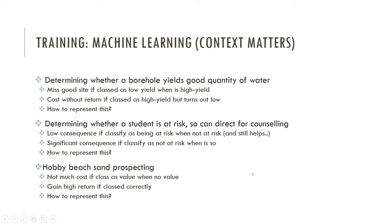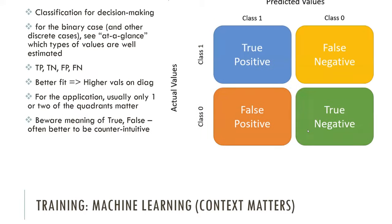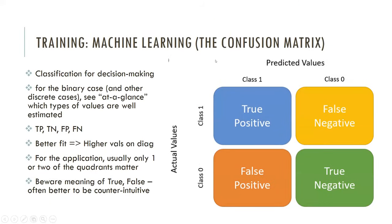Here's a different example. We use machine learning in education to estimate whether a student is at risk of failure. If estimated at risk, the student receives more counseling support. If you get it wrong and say a student is at risk when they weren't, you've just given them extra counseling. But if a student was really at risk and you didn't realize it, and that student fails, there's a missed opportunity for improving their performance. These are very different consequences to getting it wrong in different ways.